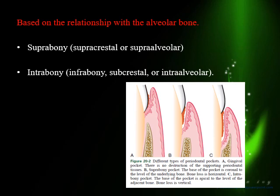If you push a probe in at any point, the probe can move along the circumference of the tooth on two or even three surfaces — this is a compound pocket. You are classifying the pocket, not the tooth. If the pocket involves one surface, it is a simple pocket. If it involves two or more surfaces and can be probed from each surface, it is a compound pocket.